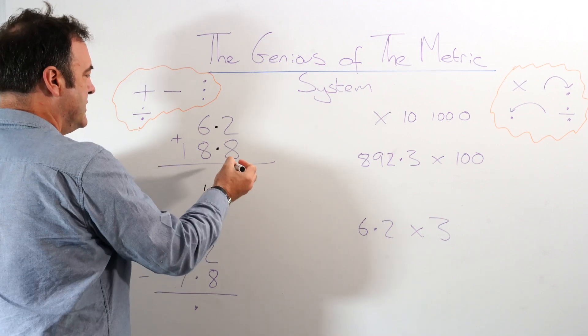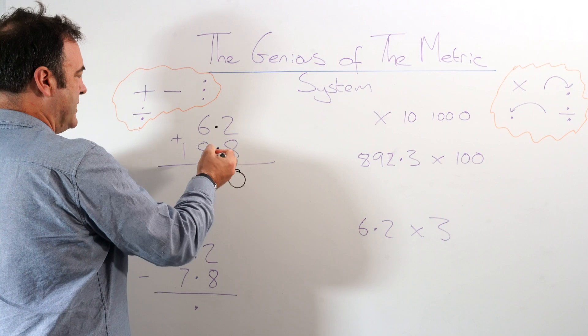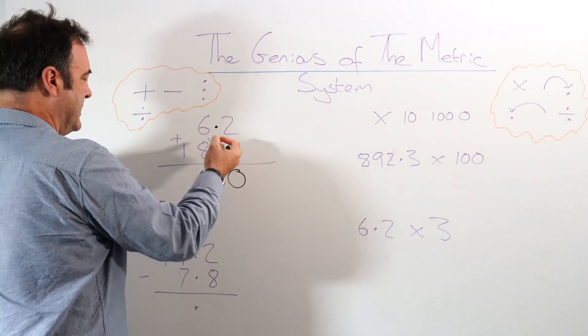And we just treat it like a normal column addition. So we carry across. We're taking one into the units here, the ones as they call it now.